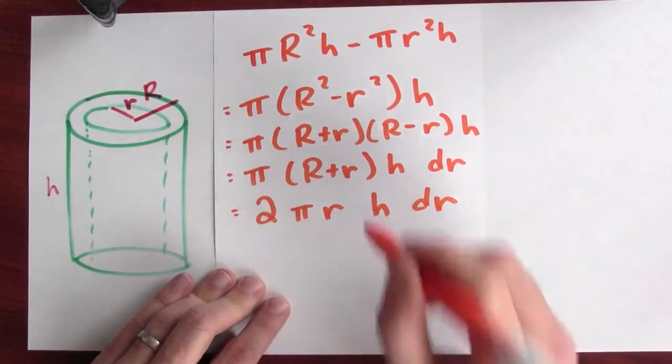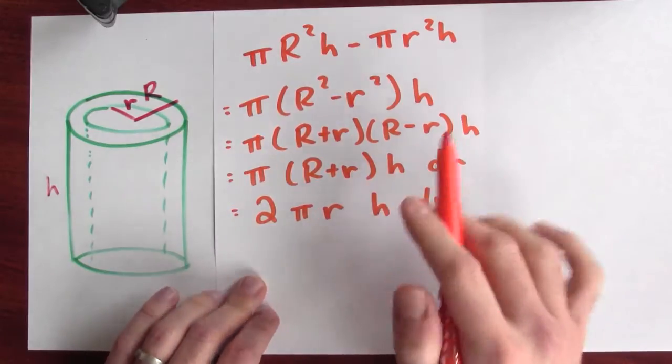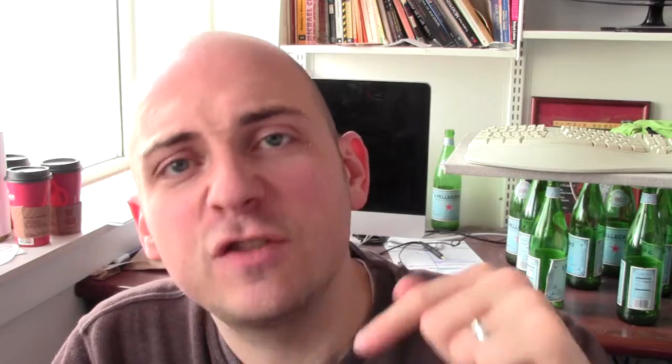And you'll see this is the same as the formula that I got before for the volume of a shell. This formula, the formula for the volume of a shell to write down an integral that calculates the volume of a solid of revolution.